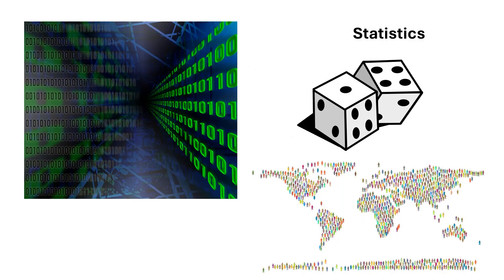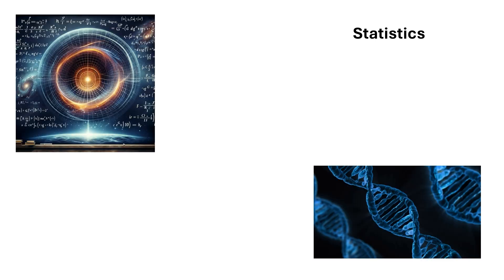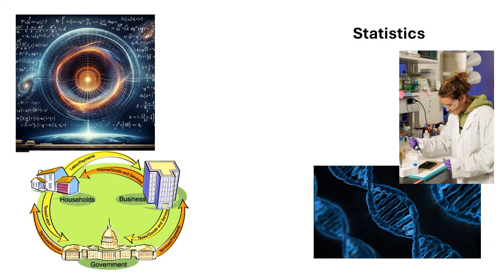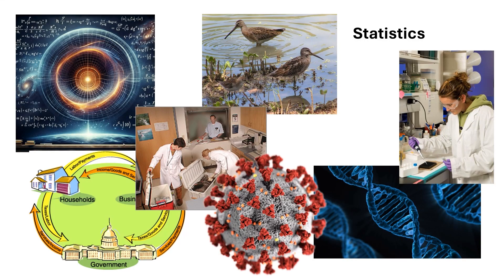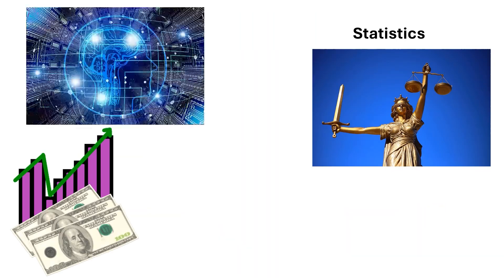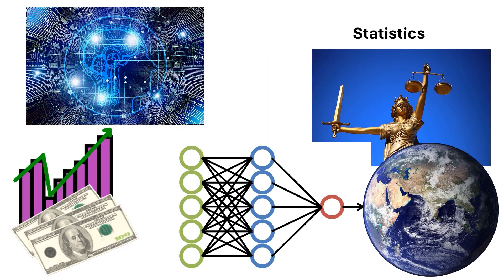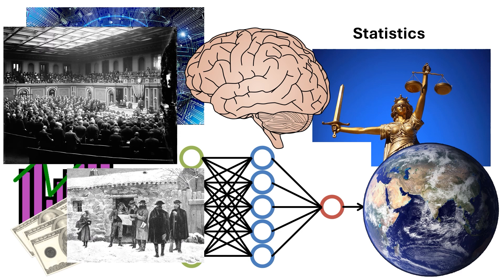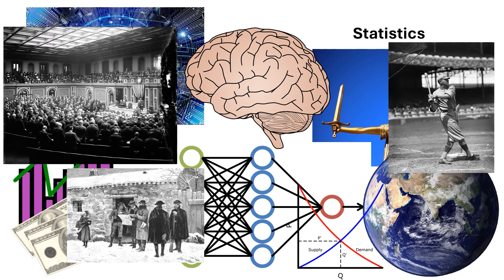Moreover, as practically all of science uses empirical data to study reality, statistics has a myriad of applications. For example, statistics finds applications to physics, biology, chemistry, economics, environmental science, forensics, epidemiology, demography, geography, law, actuarial science, machine learning, data science, ecology, psychology, social science, political science, finance, sports, and so much more.